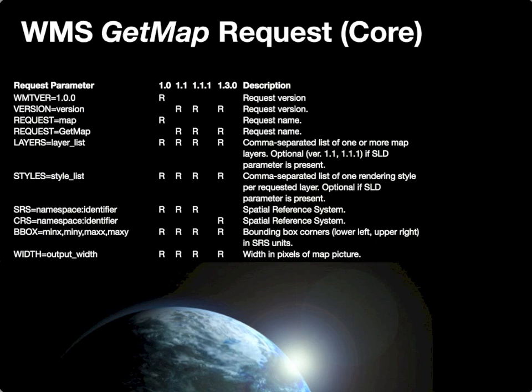That relates directly to the next required parameter: the bounding box, where the bounding box corners are specified as a comma-separated list of minX, minY, maxX, maxY for the map image that should be returned. This is required for all versions of WMS, and those coordinates must be provided in the units of the coordinate reference system specified in the request. You are also required to specify the dimensions of the map image to be returned — the width parameter specifies the width in pixels, for example, width=200.